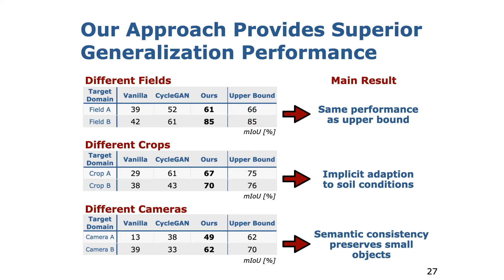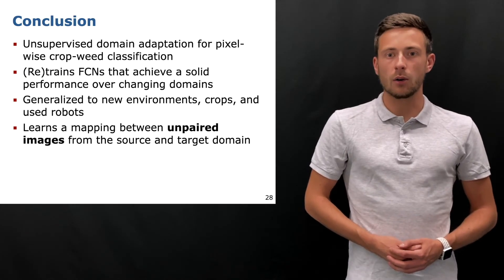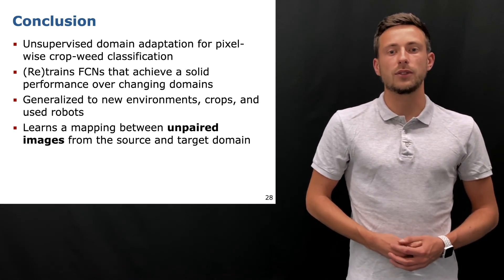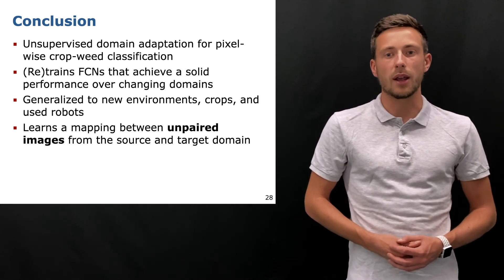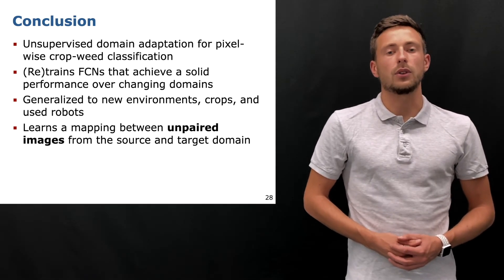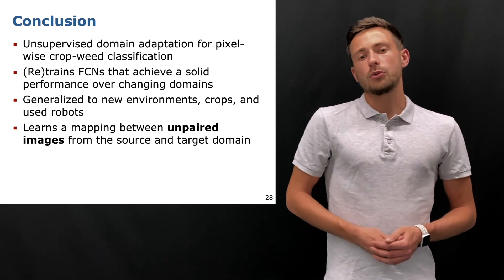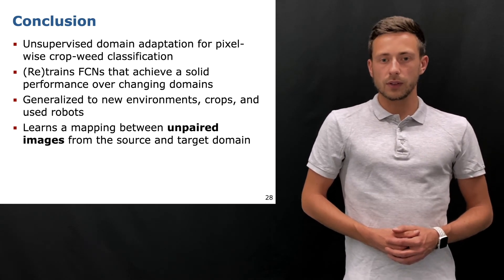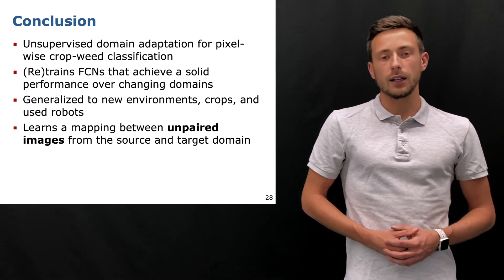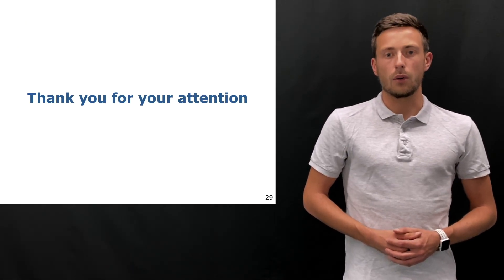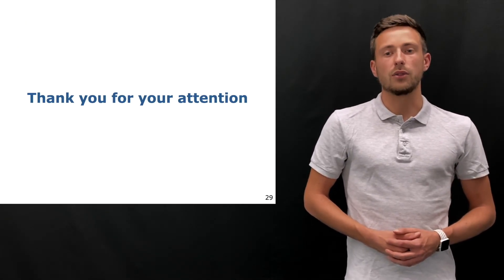Moreover, our approach substantially outperforms CycleGAN. Our approach enables retraining an FCN that achieves a solid performance in changing domains while exploiting labelled data only from a source domain. Our approach learns a mapping between unpaired images from the source and target domain by exploiting cycle as well as semantic consistency constraints. And with this, I thank you for your attention.